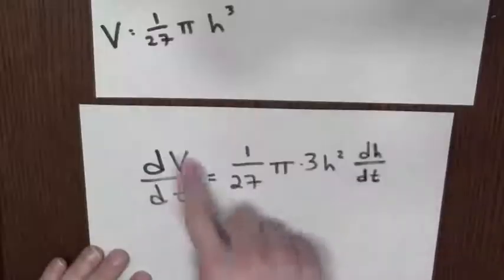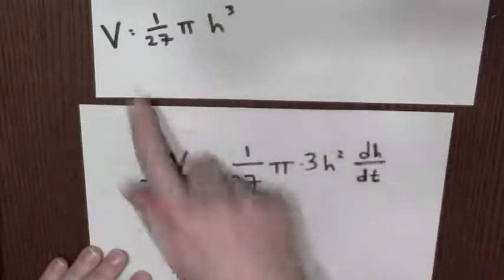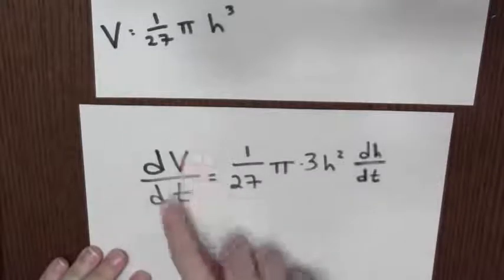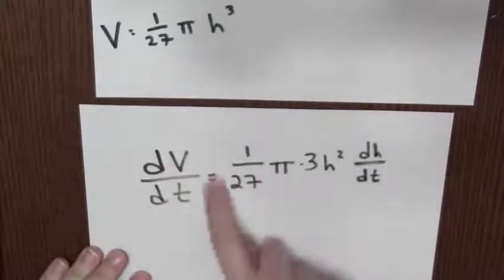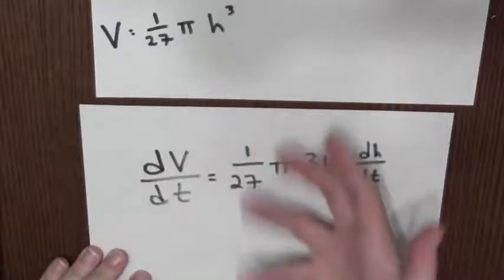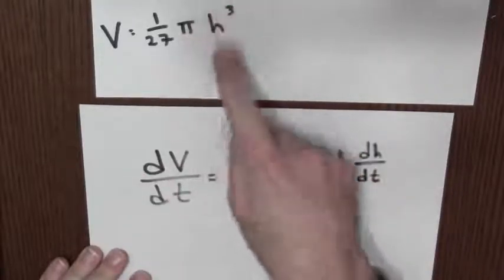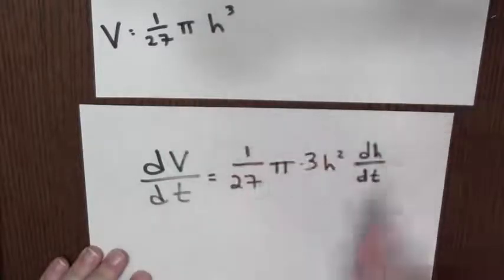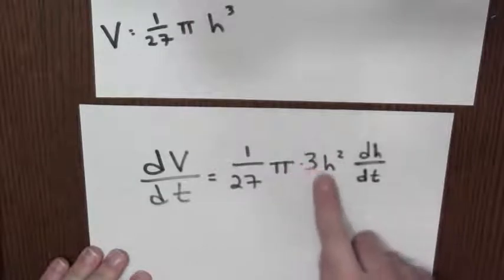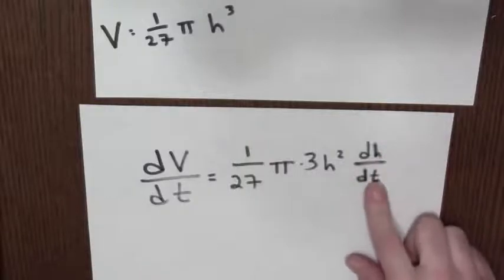Now I've got an equation and I want to know how fast things are changing, so I differentiate. I differentiate both sides with respect to time, thinking of v and h as a function of t. dv/dt is the time derivative of v, and this is the time derivative of this. The 1/27 pi is just a constant multiple, but I have to differentiate h cubed, thinking of h as a function of time. I do that with the chain rule. The derivative of something cubed is 3 times the inside function squared times the derivative of the inside, which is dh/dt.